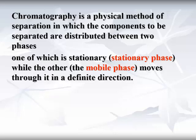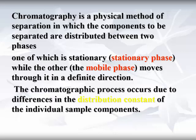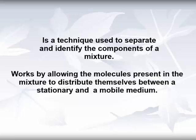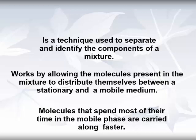The substance to be separated is called the analyte. The chromatography process occurs due to the difference in distribution constants of individual sample components. It is the laboratory technique used for the separation and quantification of concentrations of a substance in a mixture. It works by allowing molecules present in the mixture to distribute themselves between a stationary and mobile phase.